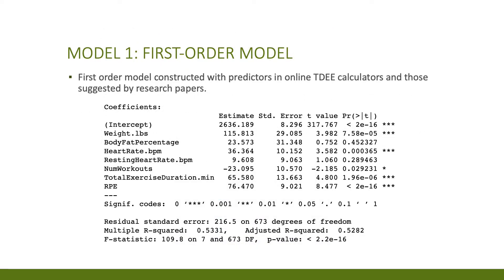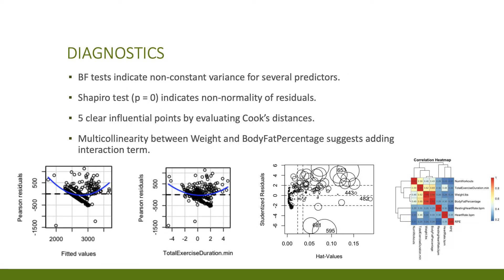I first began by constructing a first-order model using the predictors that are in these online TDEE calculators and also those suggested by numerous research papers I've reviewed. Next I performed diagnostics on the model and saw that the Breusch-Pagan tests indicated non-constant variance. The Shapiro test indicated non-normality of the residuals. The Cook's distances suggested that five points were influential, and multi-collinearity definitely existed between weight and body fat as we can see here.